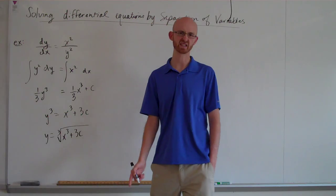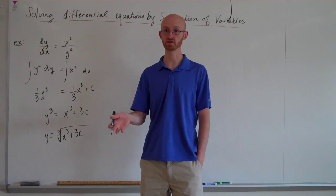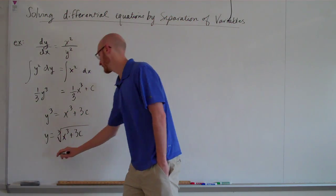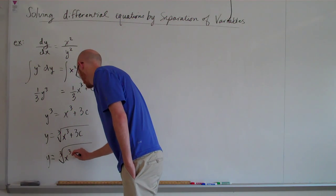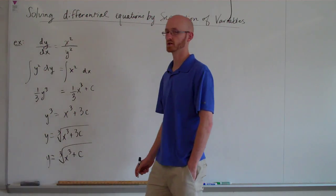If we multiply by 3, you'll get x cubed plus 3c. And then if you take the cube root, you get the cube root of x cubed plus 3c. And of course, it's a little silly to think of 3c as like 3 times some constant. Why not just say plus c.